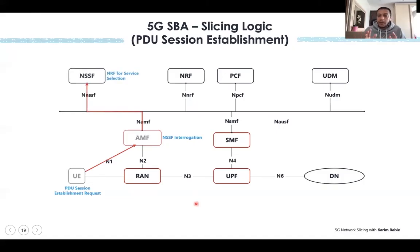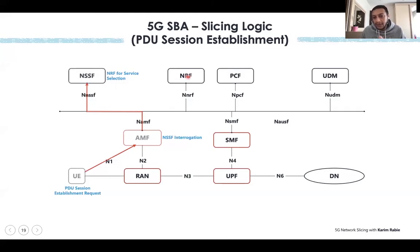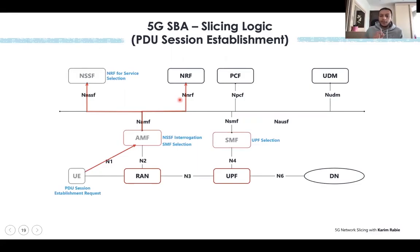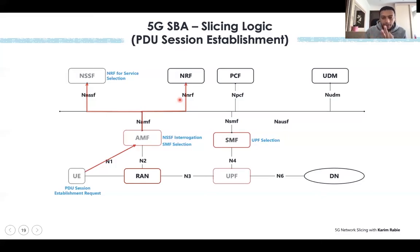The NSSF replies by directing the AMF to the NRF for server selection. The NRF — Network Repository Function — can be thought of as a DNS. The NSSF instructs the AMF to go to the NRF with the slice indication, and the NRF returns the right SMF to serve this UE. Then, with the same logic, the SMF goes to the NRF and uses the slice ID or NSSAI to select the UPF. So AMF, SMF, and UPF selection can all be based on slicing information.